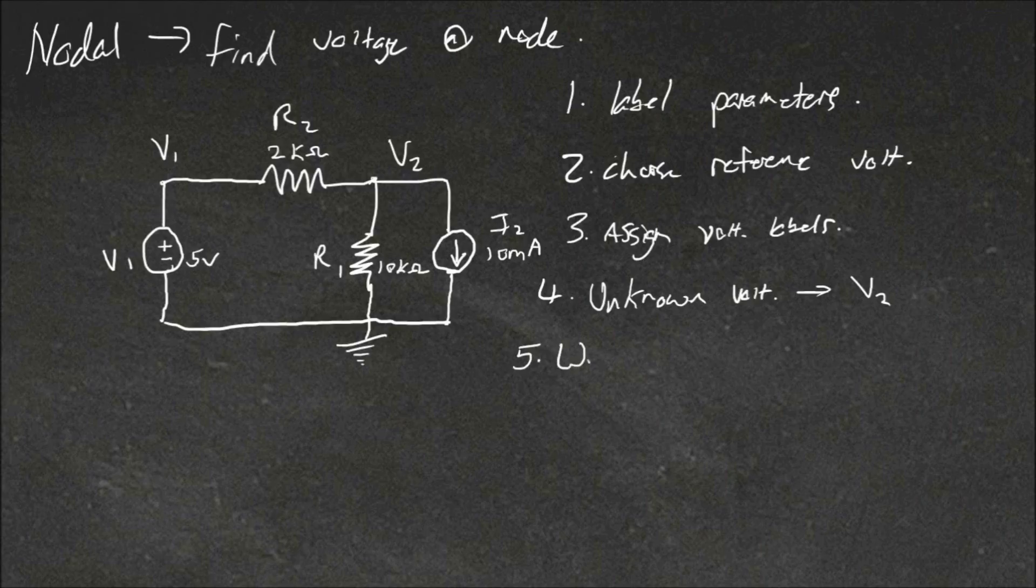Step 5 is to write out the KCL equations. So our Kirchhoff's current law. And we only need to do this for our unknown one. So we'll write our current arrows. So our arrows for the current direction are leaving this node. You know that it will be going this way because the arrow on the current source here is this way. And for these ones we just chose a value.